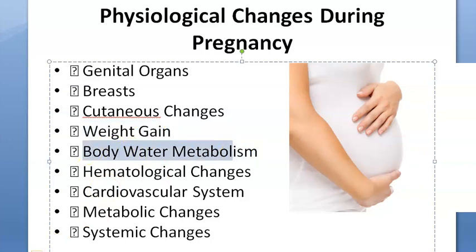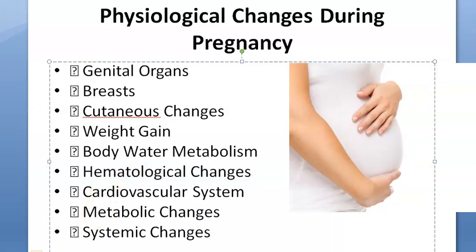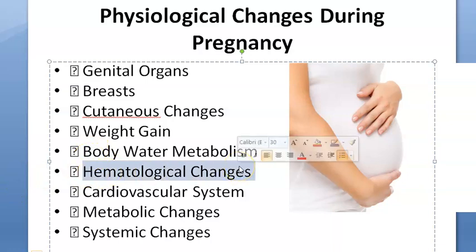Body water metabolism: water retained at term is about 6.5 liters — pregnancy is a state of hypervolemia. Hematological changes: plasma volume will increase, causing hemodilution, which looks like apparent anemia but is not true anemia. There will be neutrophilic leukocytosis. Platelets will decrease in count, but pregnancy is still a hypercoagulable state because fibrinogen levels are raised.